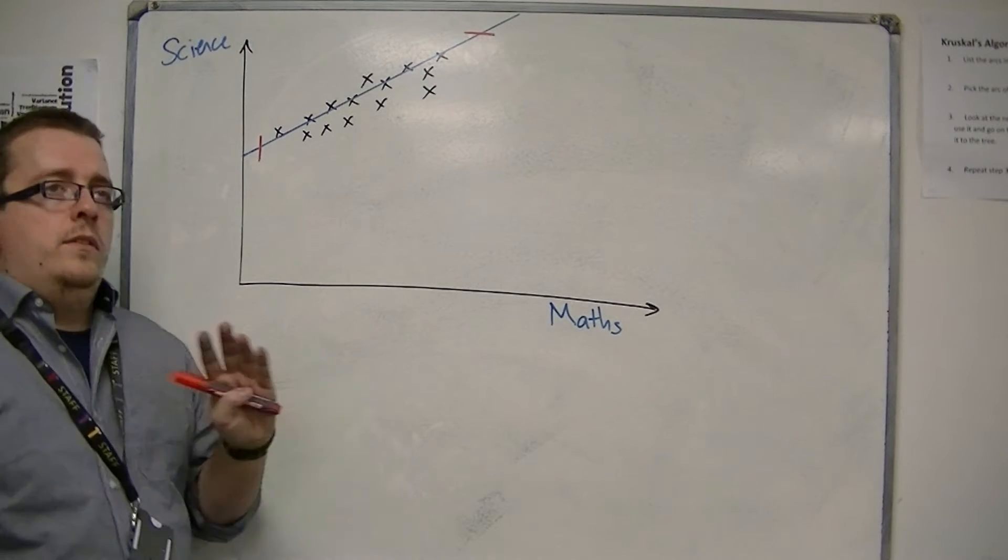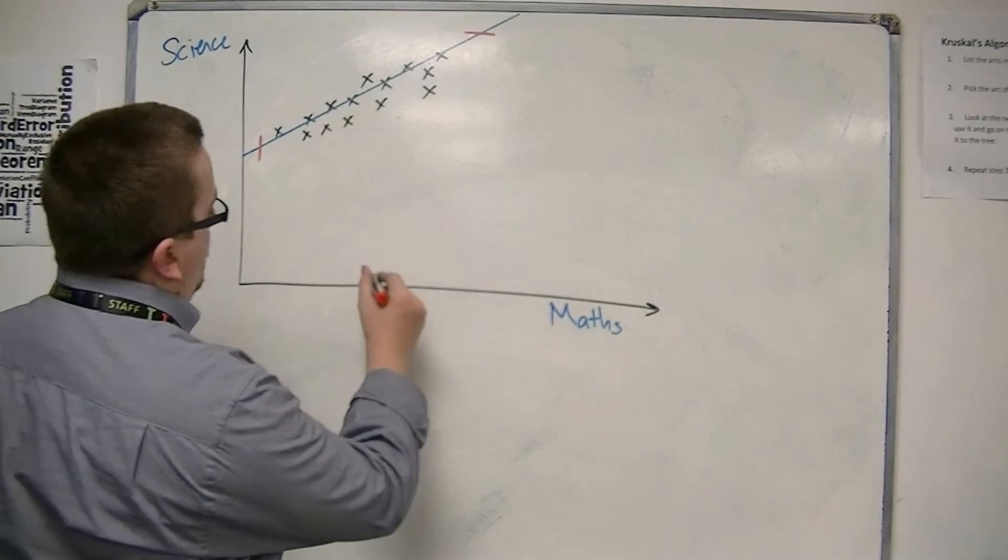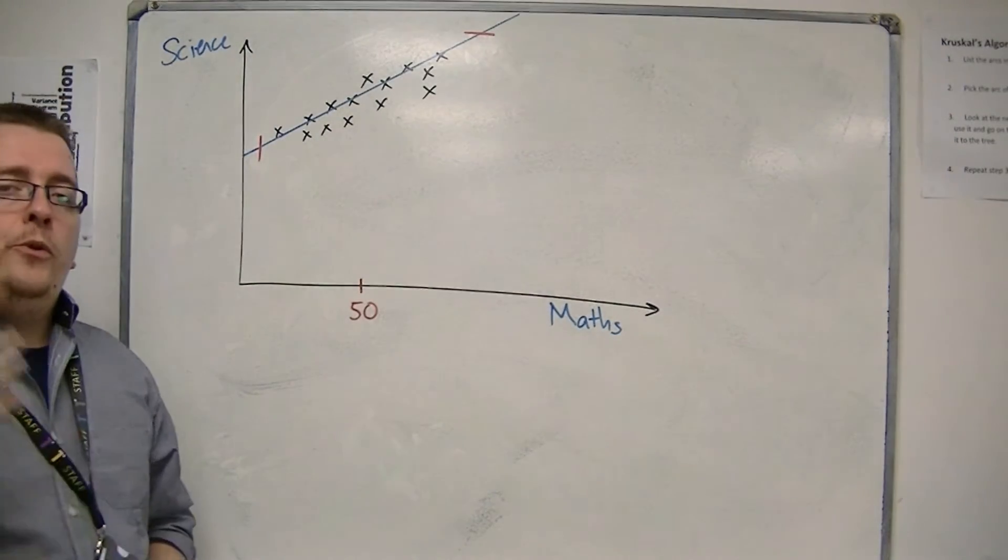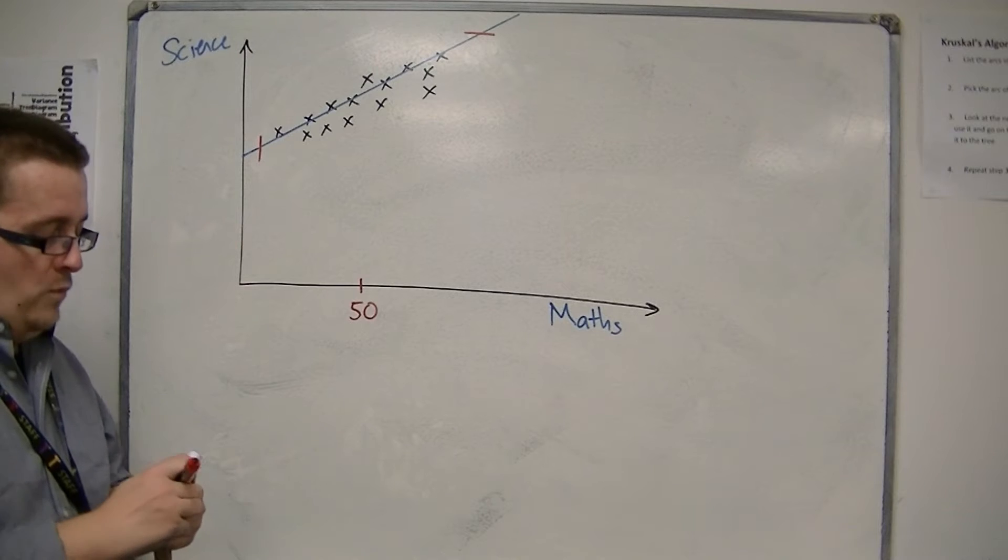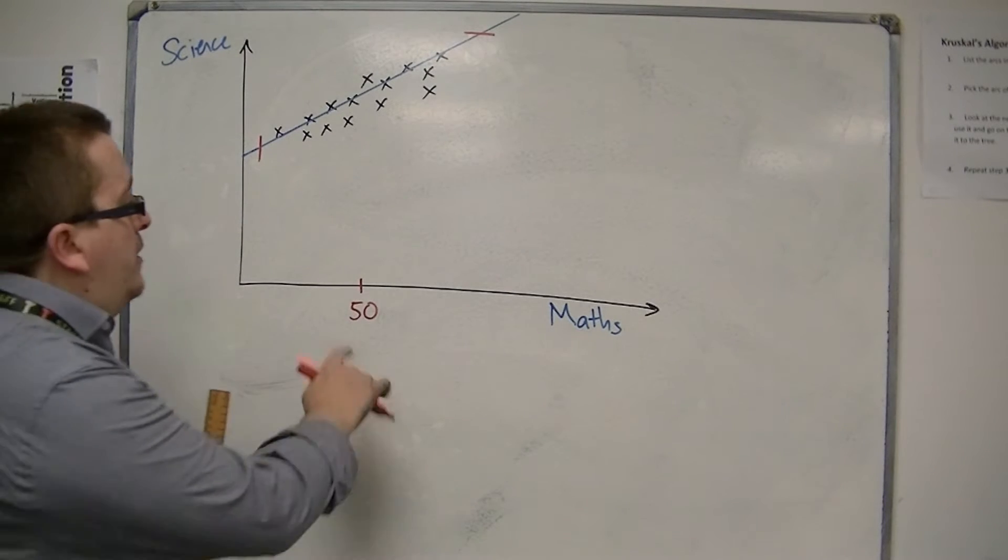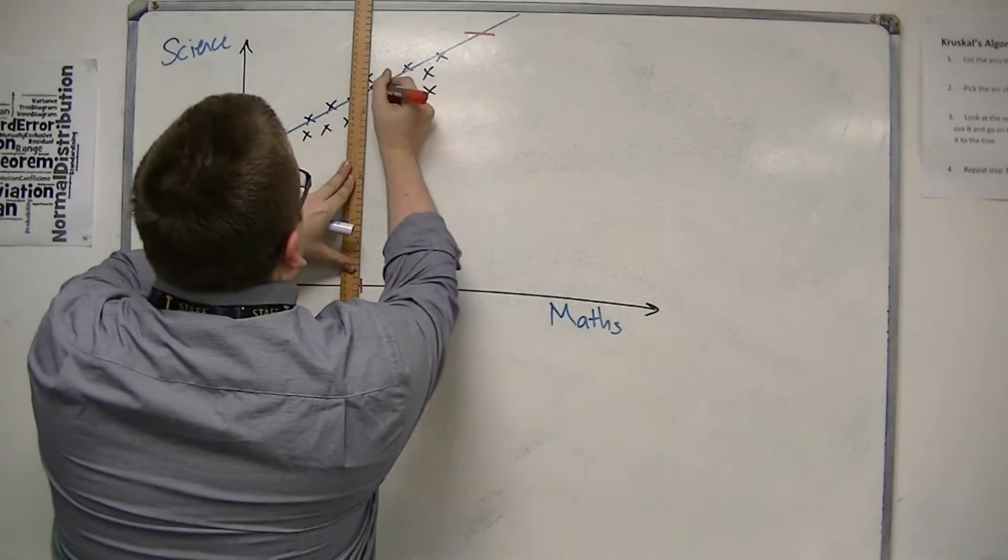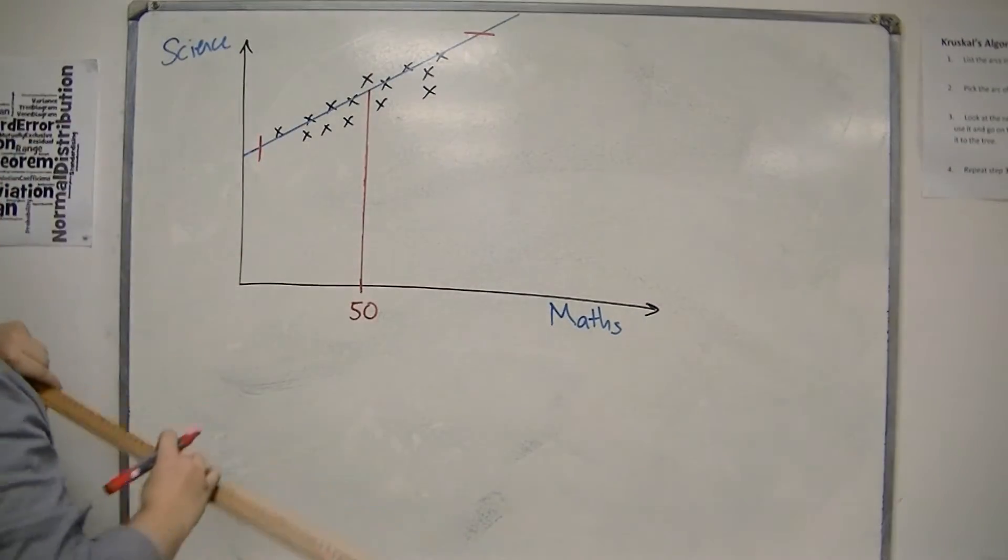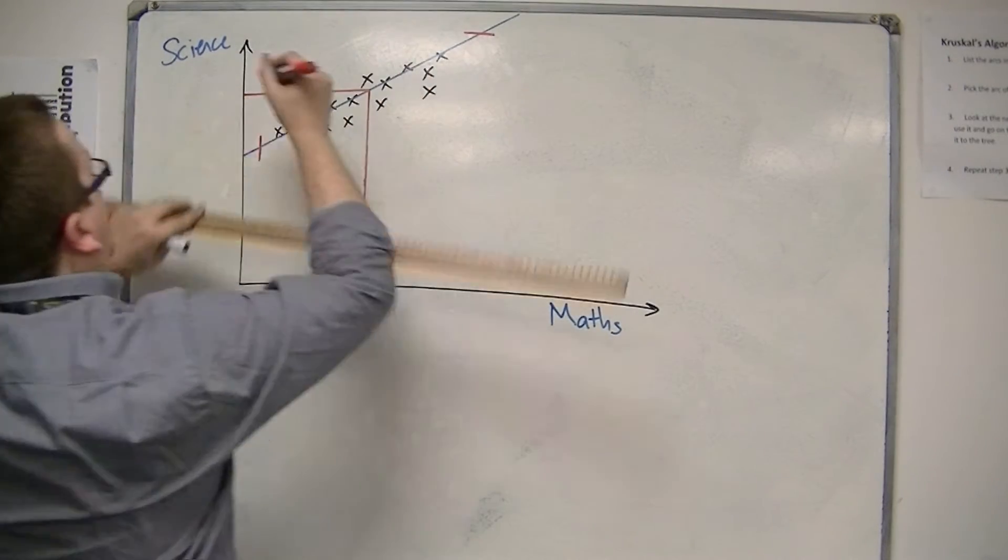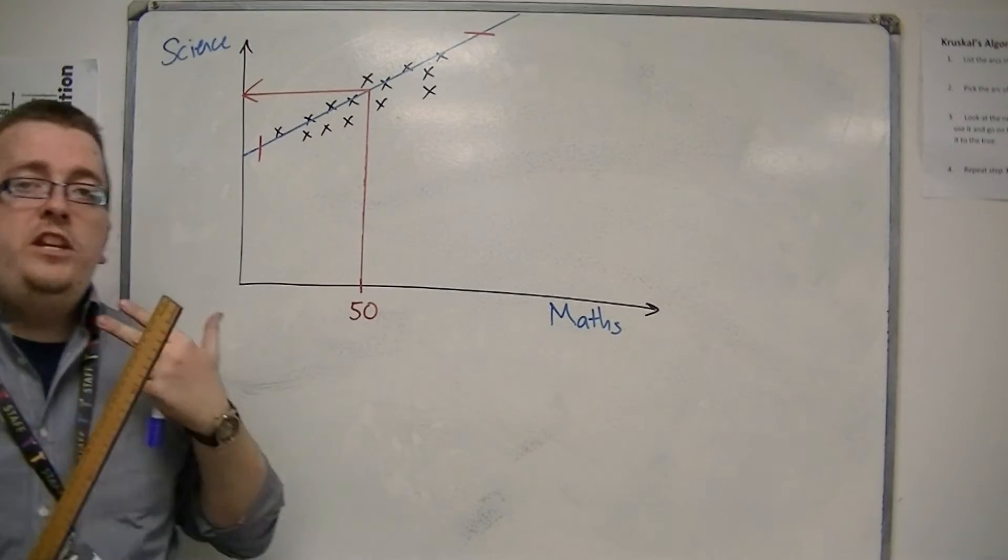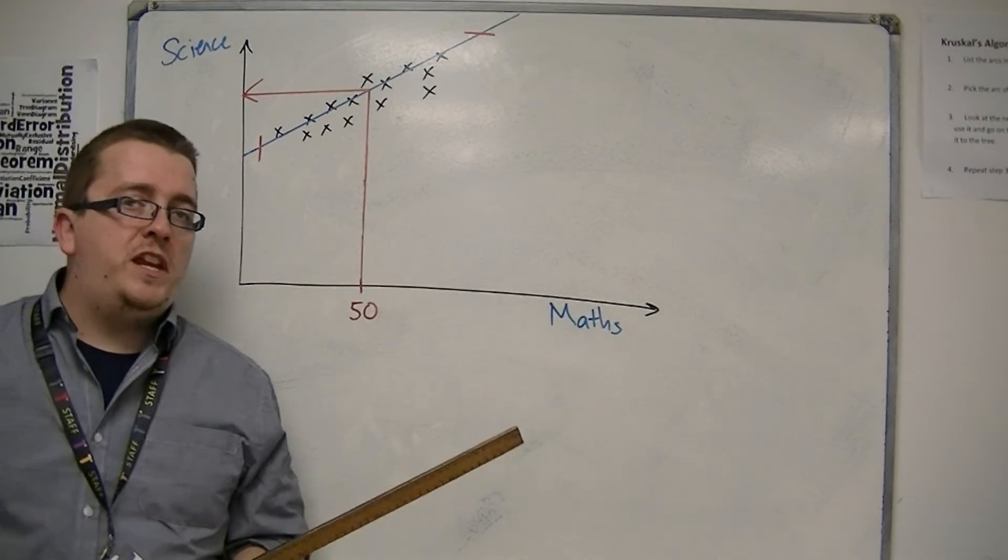Now, you might then be asked, estimate what a student would get if they had scored 50 on the maths test. So it's very important that you've drawn a line of best fit here. It must be very clear to the examiner, because we have to use it when we're going to estimate. So we look at 50 on the maths axis. We want to go straight up, vertical line to your line of best fit, and then go horizontally to the science axis. And read off that value, and that is your estimate for what a student would score on the science exam, had they scored 50 on the maths exam.